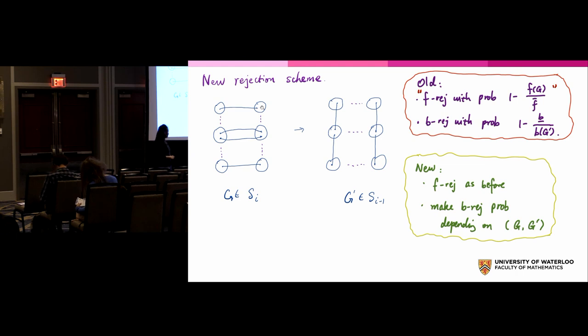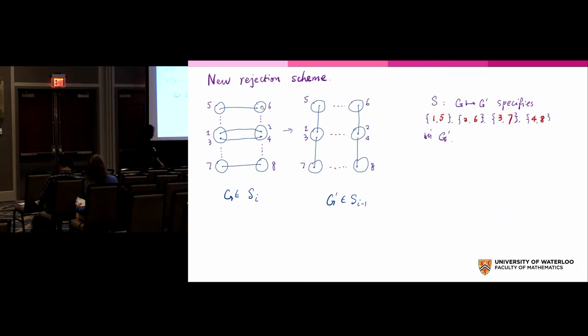This is the part you can't avoid: I have to compute the number of incoming degrees, and that costs d cubed n. The new algorithm is that we are going to use a different rejection scheme, and that rejection depends on the switching where you switch g into g prime. Remember, in the previous rejection you just look at g prime. I just count how many ways I can switch in. I don't care if you are switching into me from g or some other graphs. It's the same.